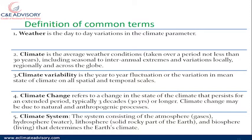When it comes to climate variability — a very important term — this refers to the year-to-year fluctuation or variation in the mean state of climate on all spatial and temporal scales. By spatial we mean space, and by temporal we mean time. For instance, one season you have a lot of rainfall, the next season less rainfall, and another season it's very dry. That's what we mean by climate variability.